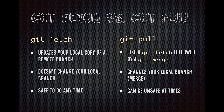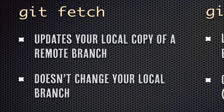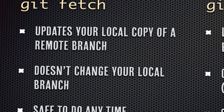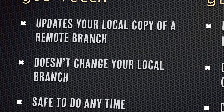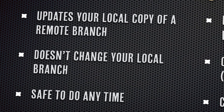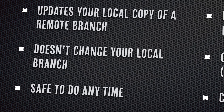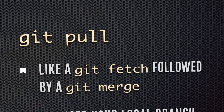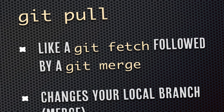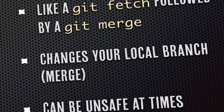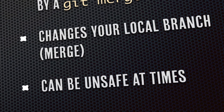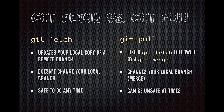First, let's talk about Git fetch versus Git pull. This is confusing to people. A lot of us will just do Git pull because that's what we see in tutorials, when Git fetch might be a better tool. Git fetch will update your local copy of the remote branches — it doesn't change your local branch, so you can work safely and not have your changes get overwritten. It's safe to do at any time. A Git pull is like a Git fetch followed by a Git merge — it changes your local branch because it's merging code into what you're working on, and it can be unsafe at times.